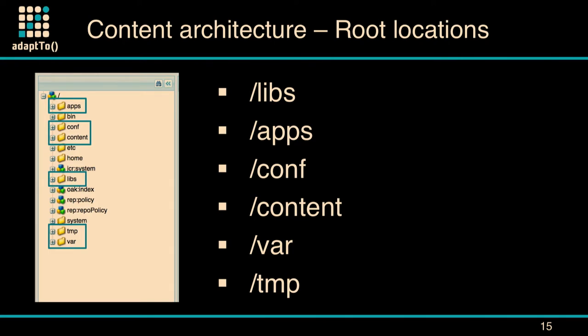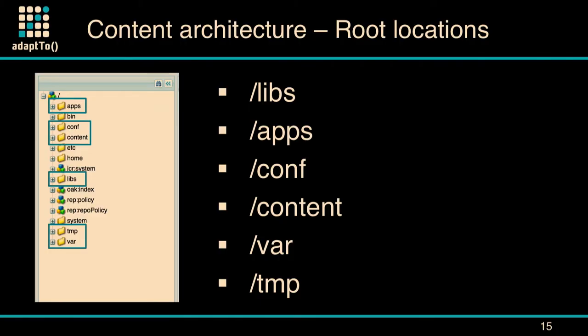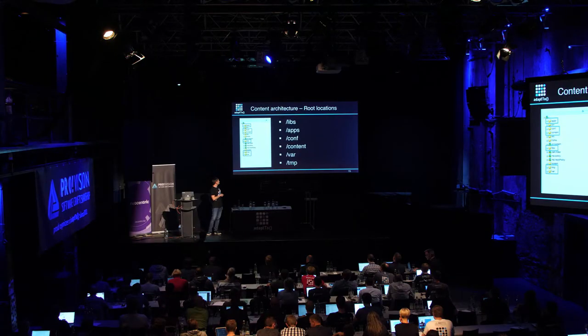We have conf, which — if you remember the presentation on context-aware configuration — is the global configuration container. Conf is the location for runtime-deployed configurations, the ones you can configure at runtime; otherwise those should go to libs or apps. Then there's content — everybody knows that, it's the user-space, user-generated content. And then there's var and temp, which are mostly system content. The difference is that temp is disposable while var is not.